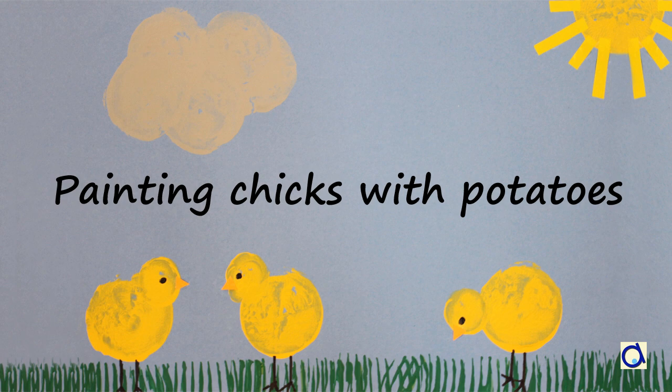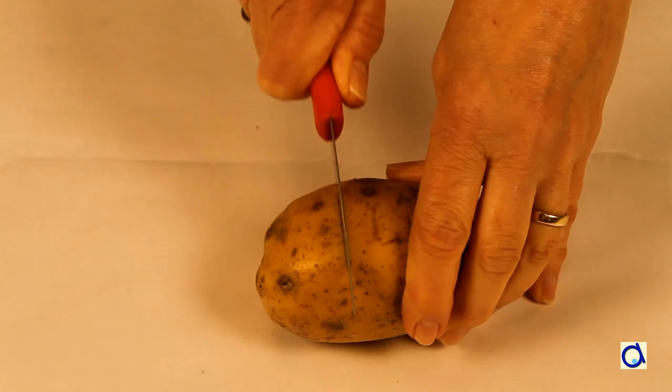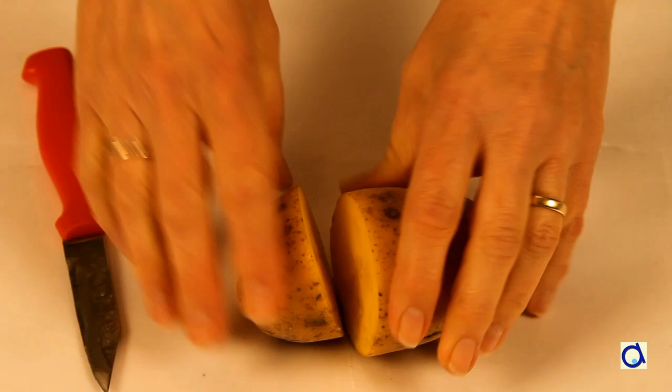You will need a sheet of blue construction paper to bring out the colors of the painting. Cut the large potato in half. One half will be used to paint the bodies of the chicks.